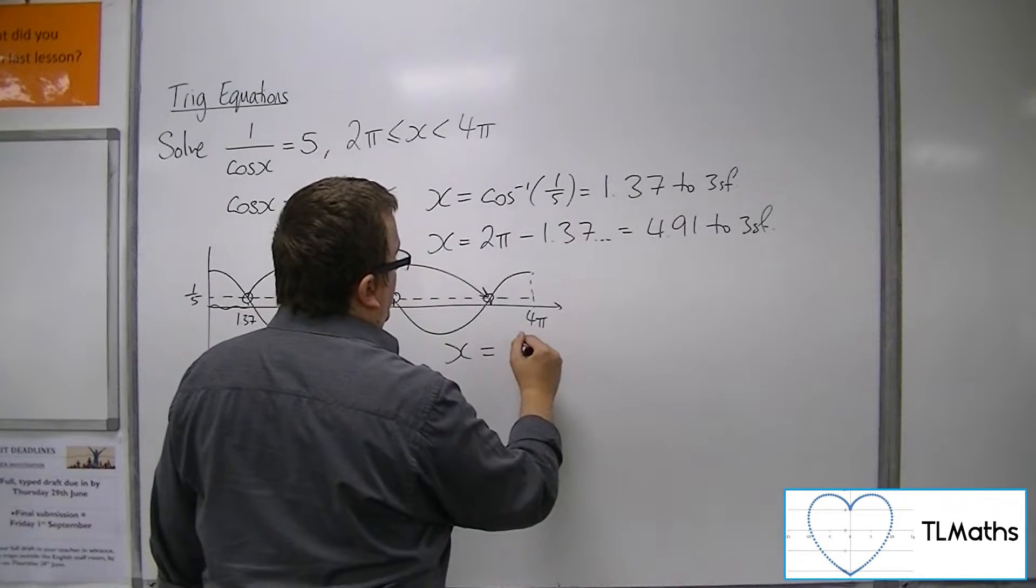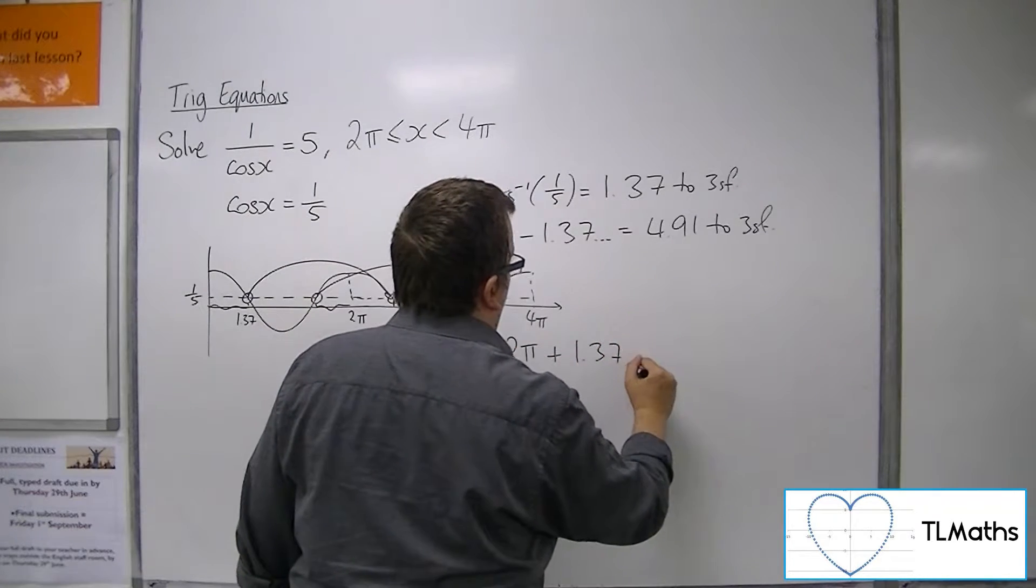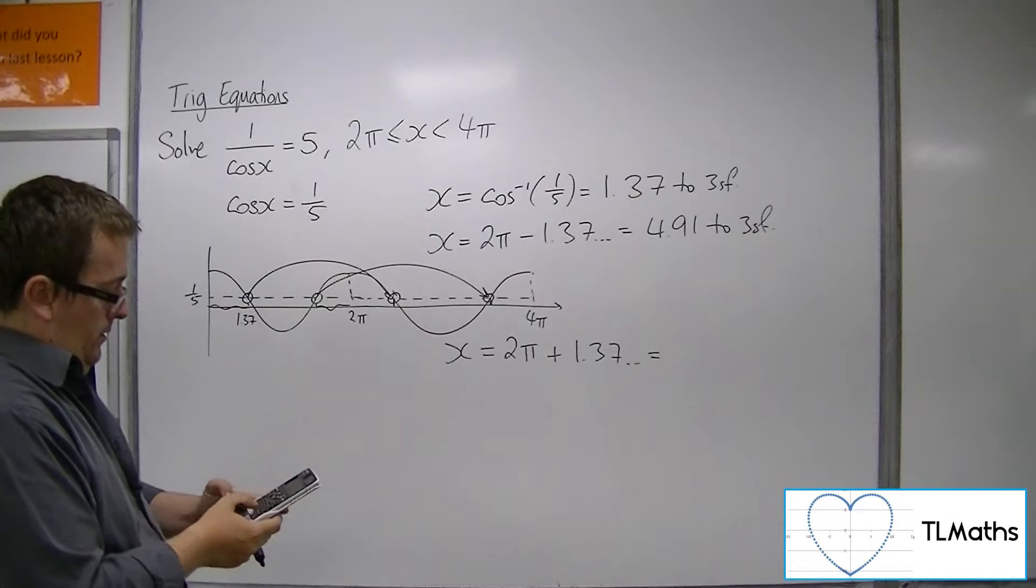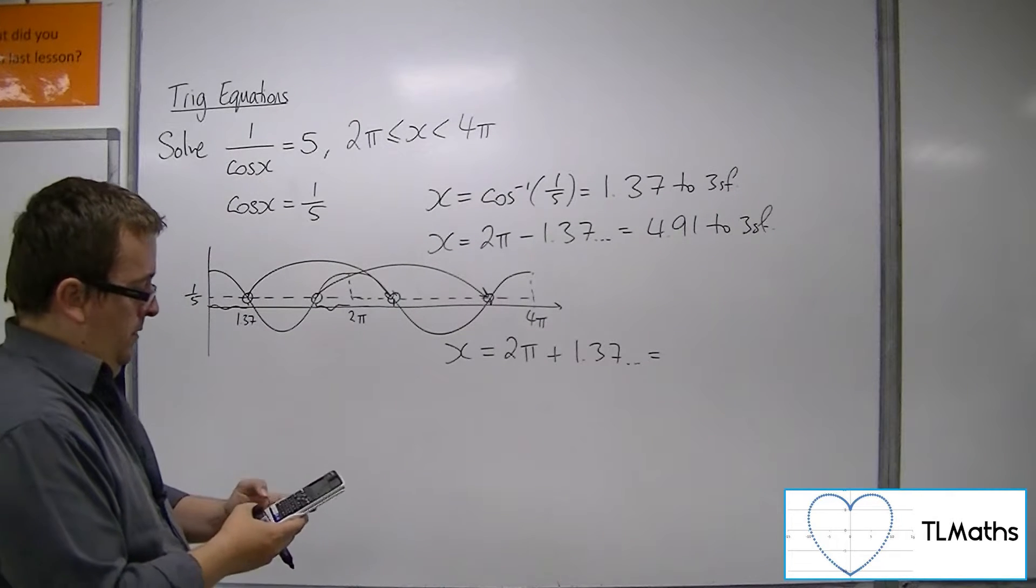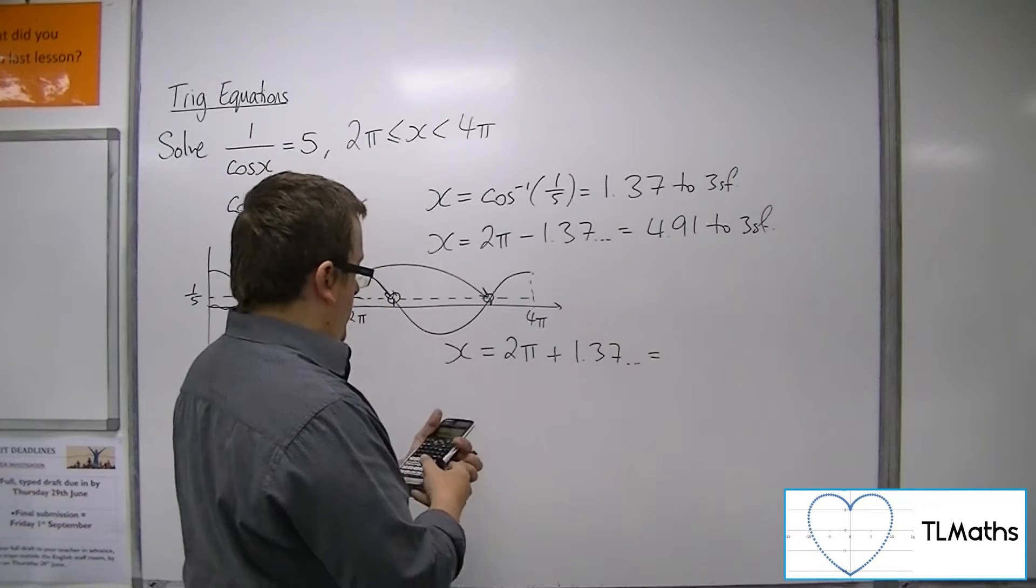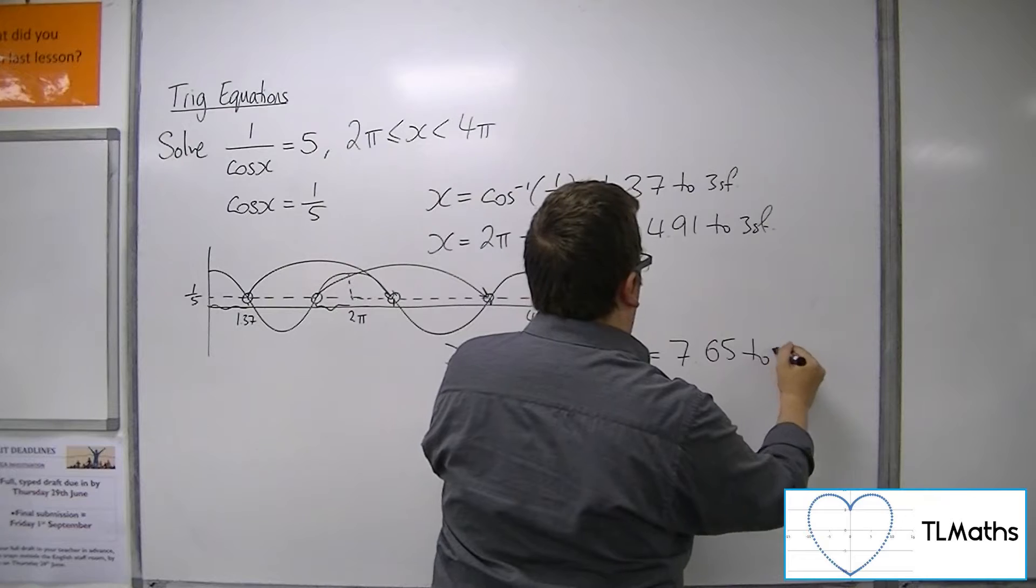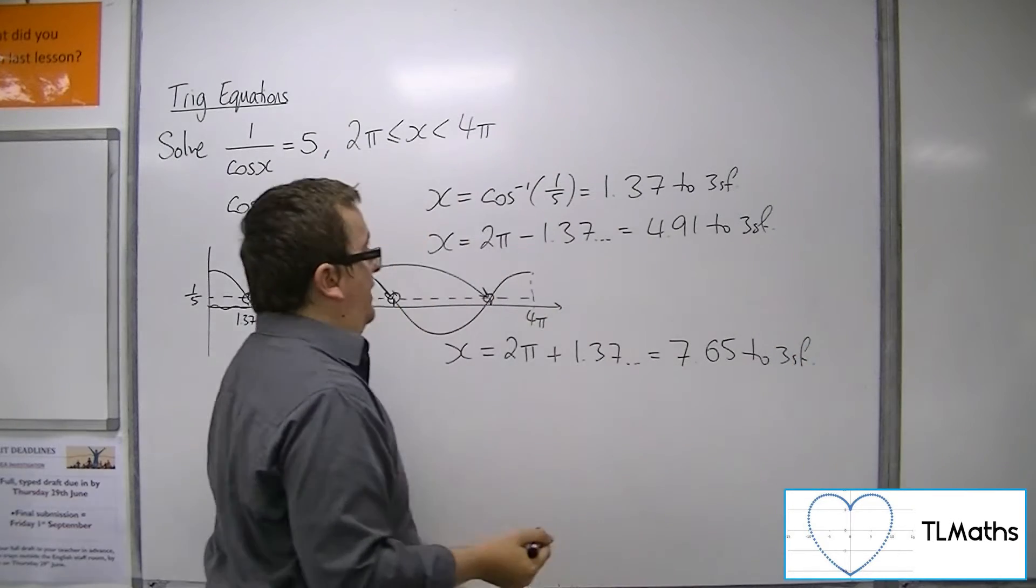So I'm going to add 2π onto the 1.37. So plus 2π is 7.65 to three significant figures.